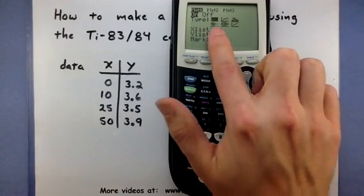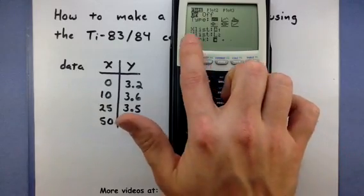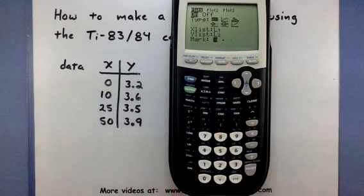The type, we will select the first one which is our scatter plot. We want it to draw the data from list 1 and list 2, good. And we want the marks to be little boxes. Perfect.